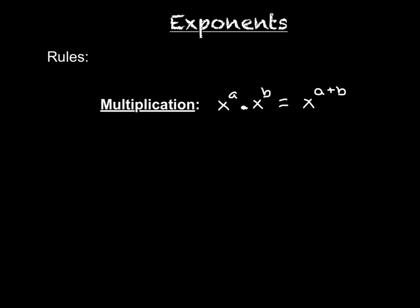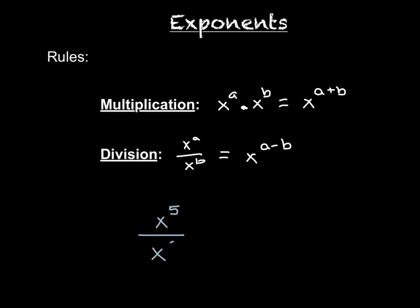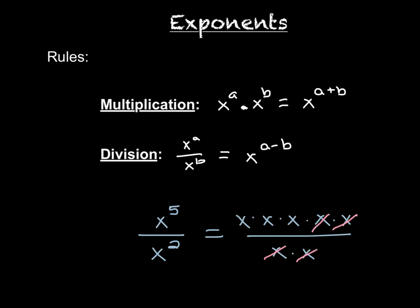The next rule deals with dividing two terms that have the same base. So if we have x to the a divided by x to the b, all you have to do is just subtract the exponents. For example, let's say we had x to the fifth divided by x squared. We know that x to the fifth is x times x times x times x times x, and x squared is just x times x. If we cancel off two of the x's in the numerator with the two x's in the denominator, that leaves us with three x's — x to the third — which is the same as subtracting the exponents: five minus two is three.